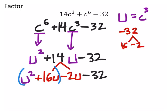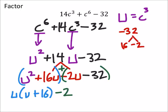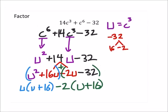So here I can factor out a u, which leaves me with u plus 16. And on the second set, I can factor out, because this is plus, I can factor out a negative 2, which gives me u plus 16, which is what I wanted really.